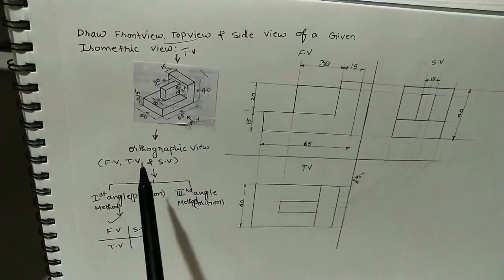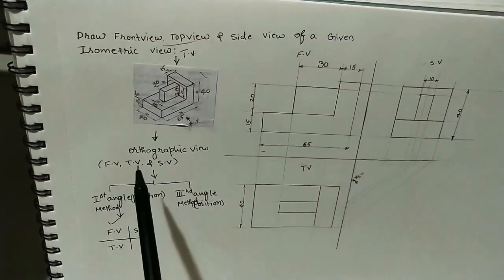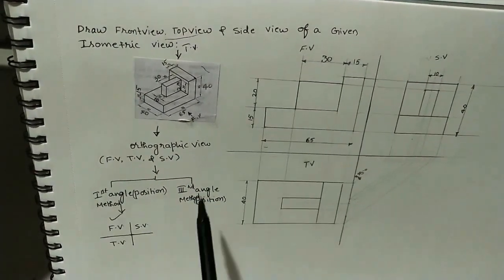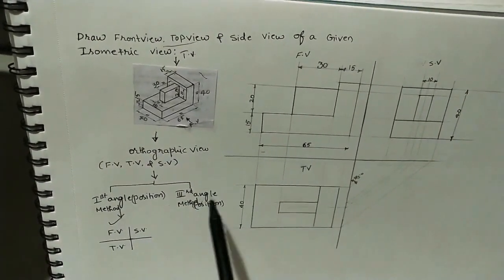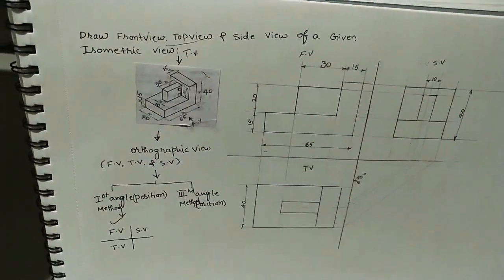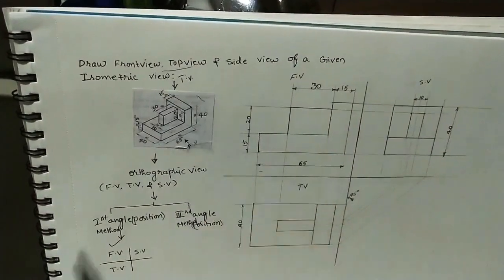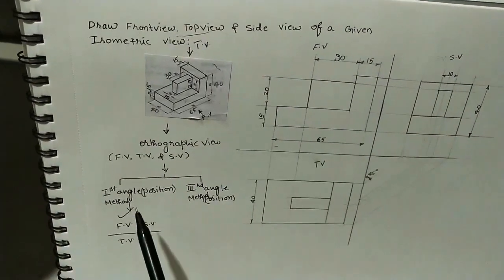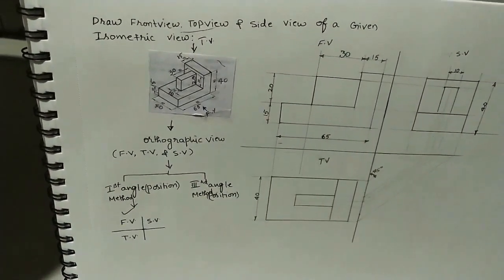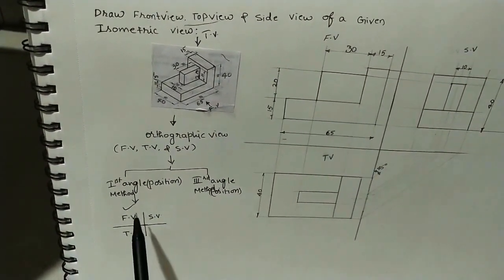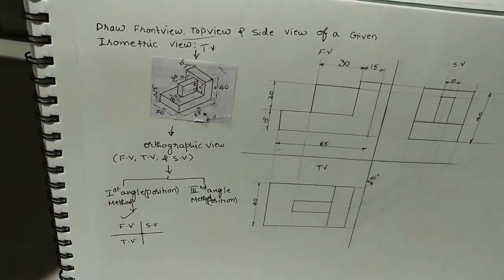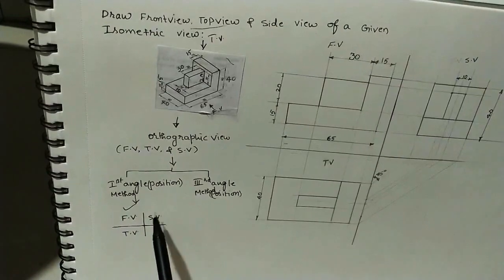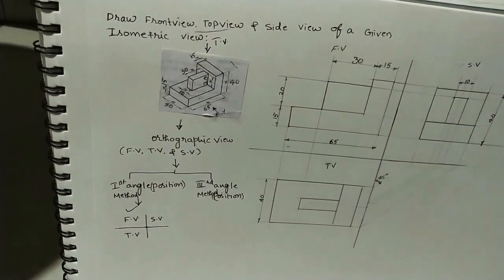For doing the orthographic view — that is front view (FV), top view, and side view — in engineering drawing we follow 2 methods: one is the first angle method, and the second is the third angle method. We can follow either method. In the given question, the method name has not been given, so in that case we follow the first angle method. In the next class I will explain what is first angle method and what is third angle method. For now, just remember: in the first angle method, first do the front view, then below the front view take the top view, and to the side of the front view do the side view.